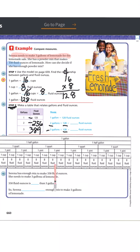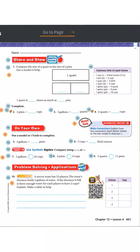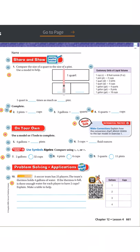Let's do just a couple more problems and then you'll be ready for MathSpace. Number one: compare the size of a quart to the size of a pint. Looking at my conversion chart, one quart is the same as two pints. So one quart is two times as much as one pint.